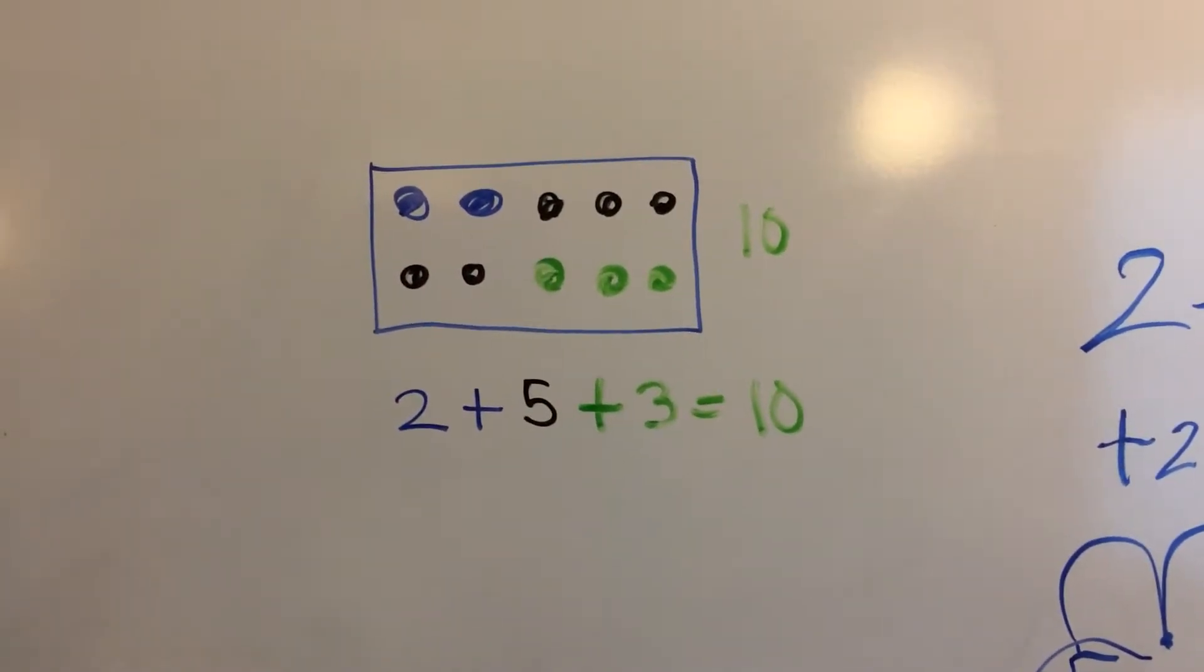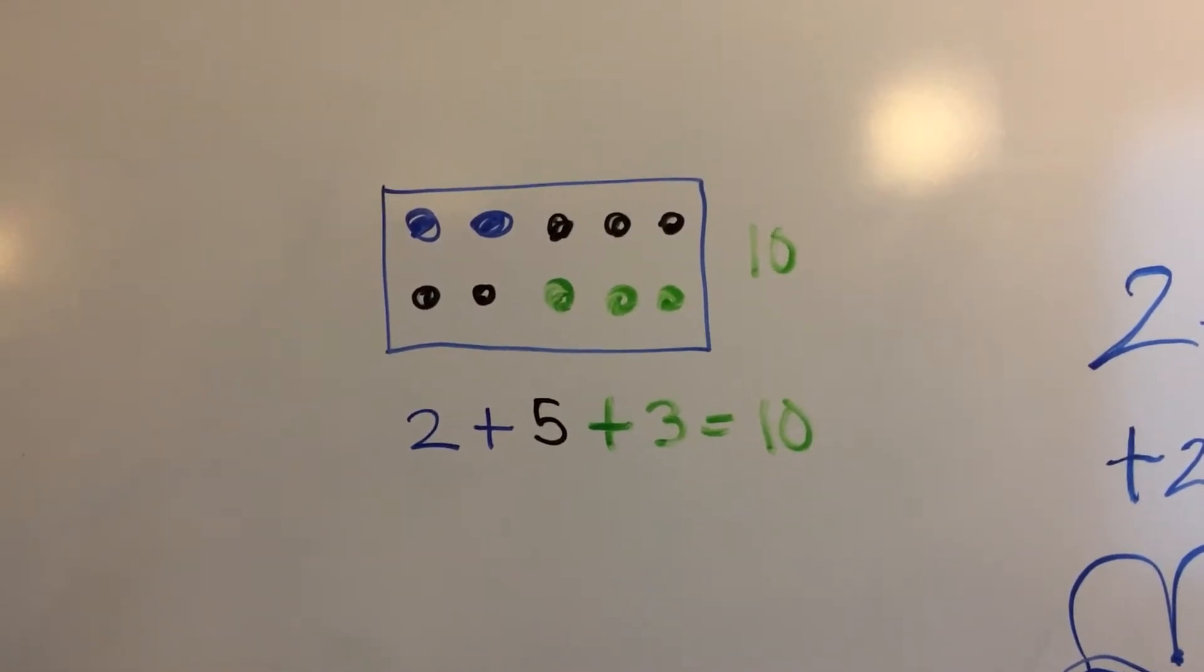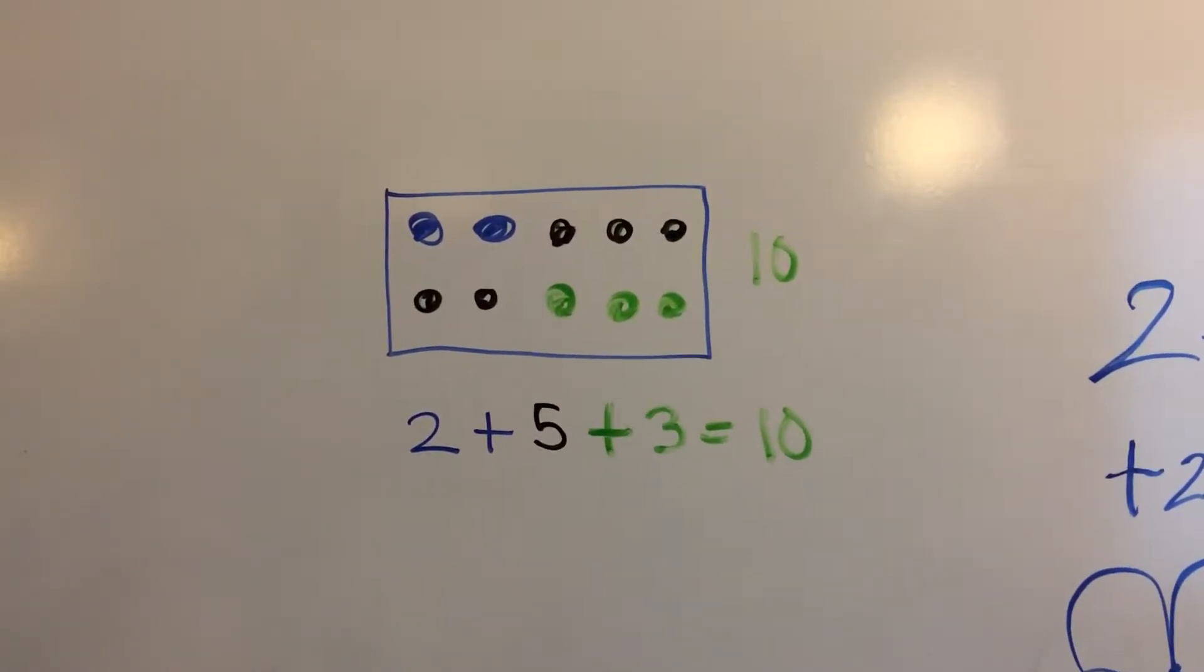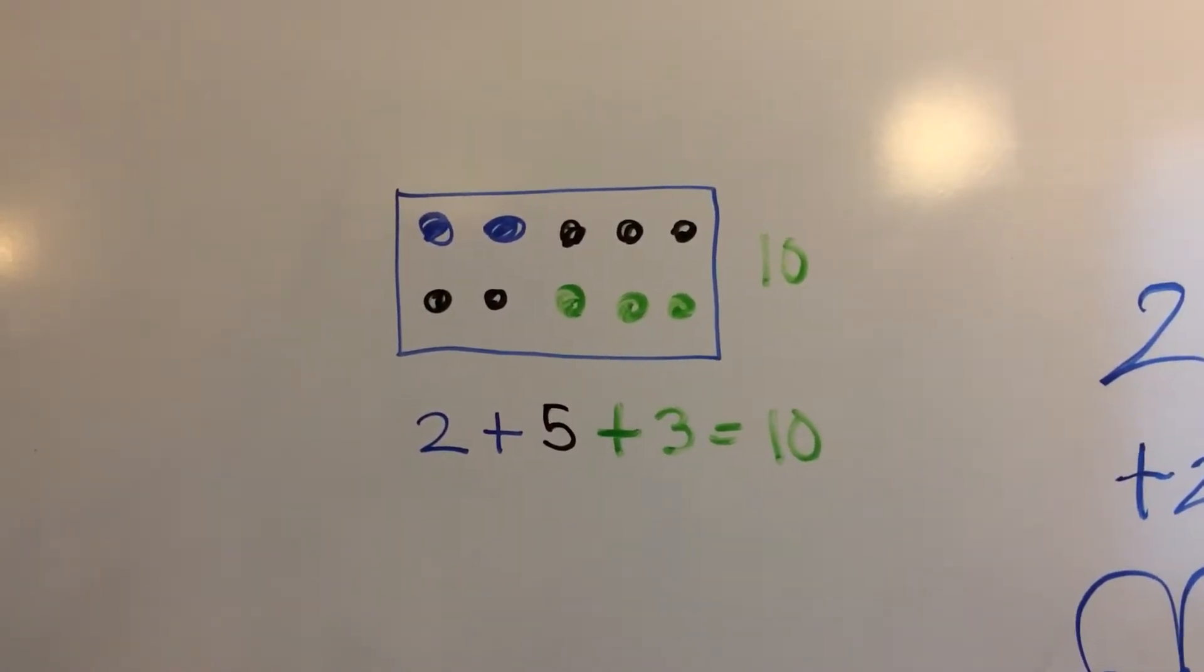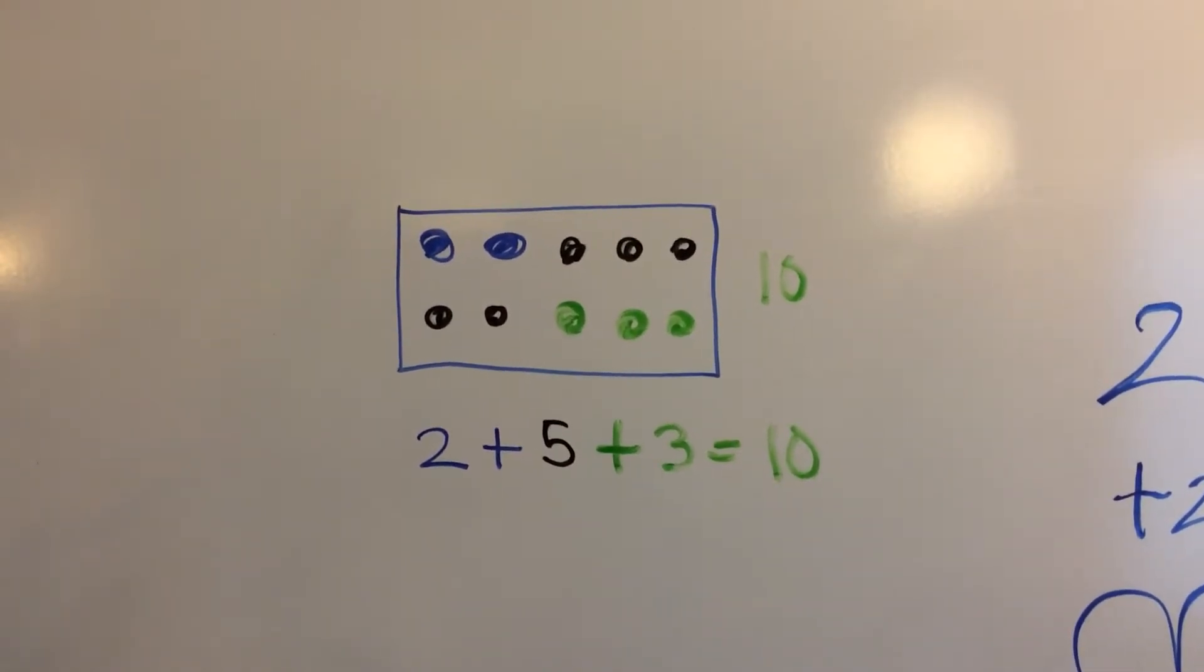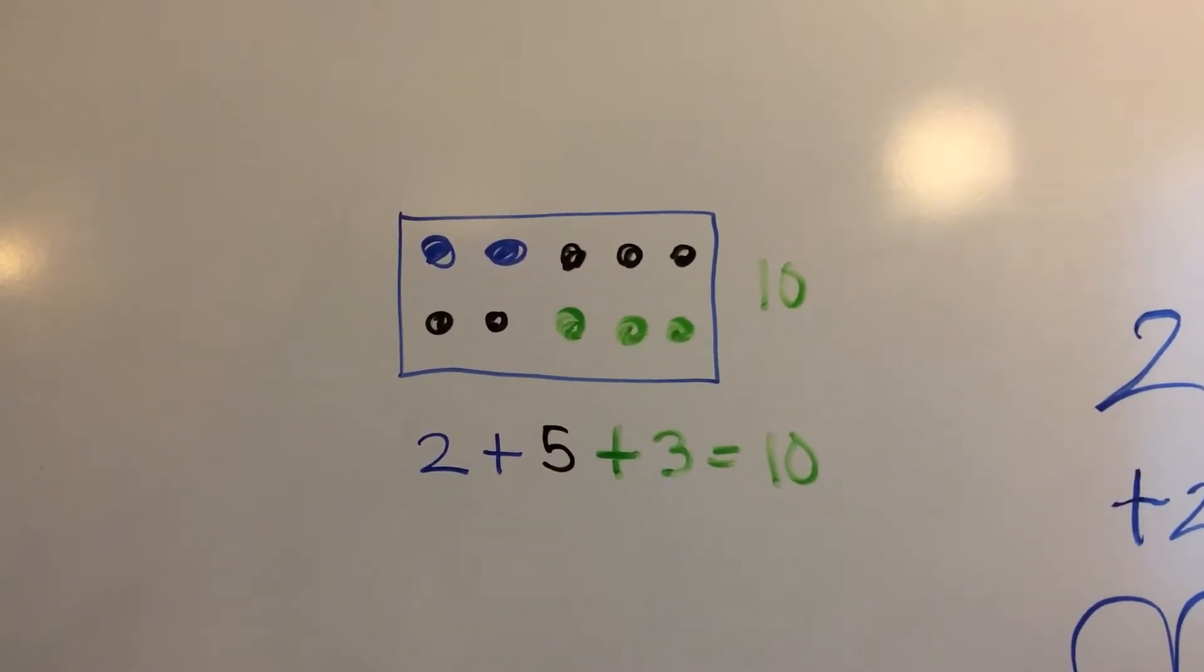Hi parents, this is a 10 frame model first graders and kindergartners use for showing their solutions with equations, both in addition and subtraction. Notice with the 10 frame model they use five in a row, and once they make a full 10, they put a box around it. Also, all parts of the equation are shown in a different color.